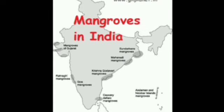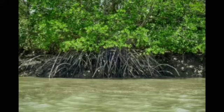The deltas of the Ganga, the Mahanadi, the Krishna, the Godavari and the Kaveri are covered by such vegetation.